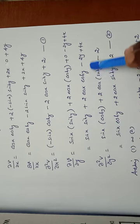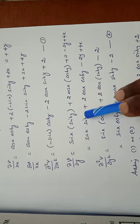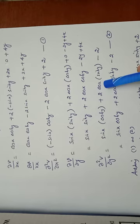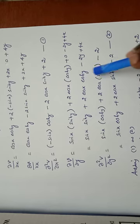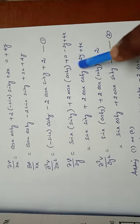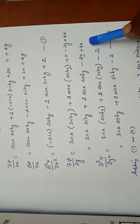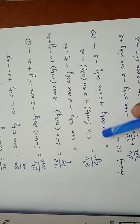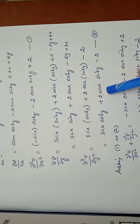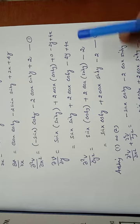Again, this function can be differentiated partially with respect to y. So ∂²v/∂y² equals: sin x is fixed, differentiation of sinh y is cosh y; plus 2 cos x is fixed, differentiation of cosh y is sinh y; minus 2; 4x becomes 0. So ∂²v/∂y² equals sin x cosh y plus 2 cos x sinh y minus 2. This is equation number 2.